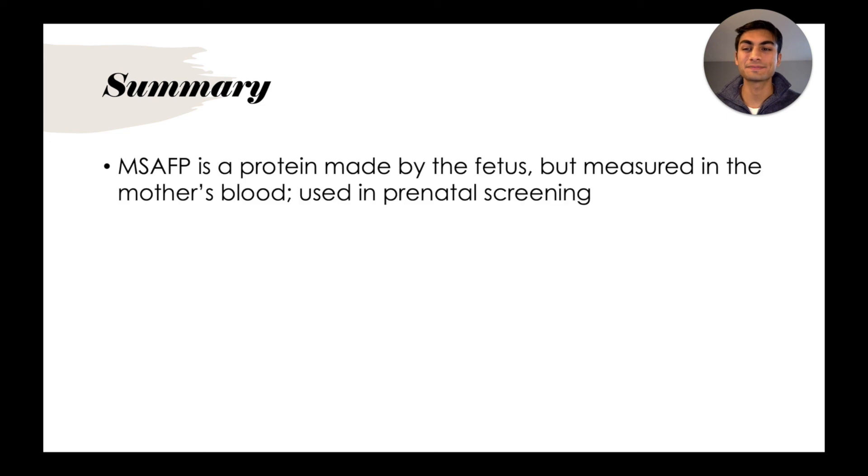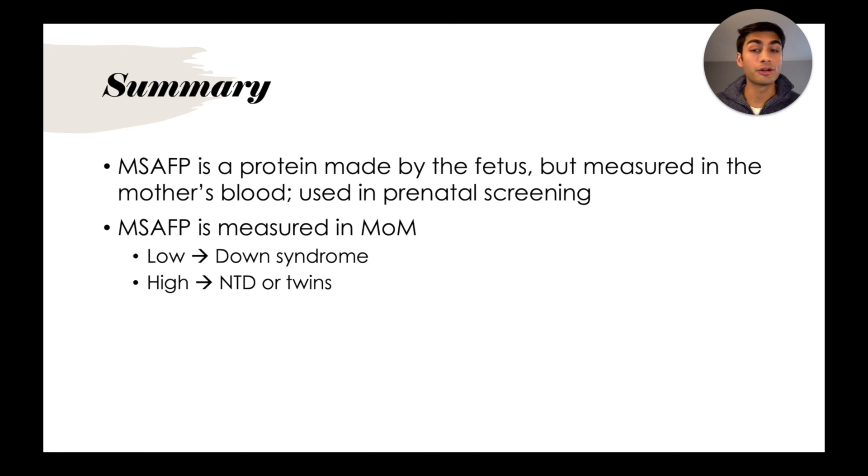All right, that's all everyone. Let's summarize what we learned today. We learned that MSAFP is a protein made by the fetus but measured in the mother's blood, and it's often used in prenatal screening. It is measured in multiples of the median, and a low value can indicate Down syndrome, while a high value can indicate neural tube defect or twins. Lastly, in the case of an elevated MSAFP, the next step is going to be a referral for ultrasound.